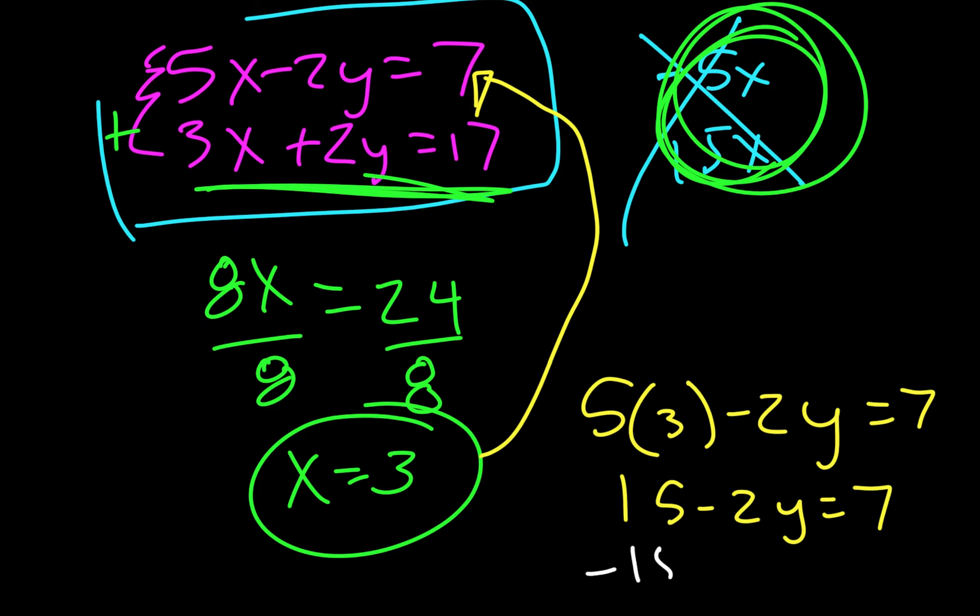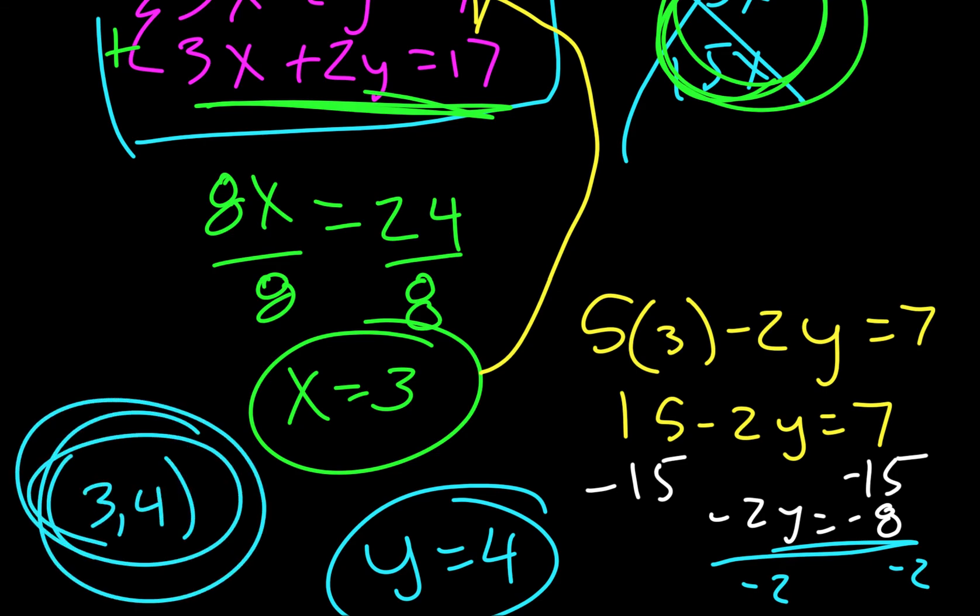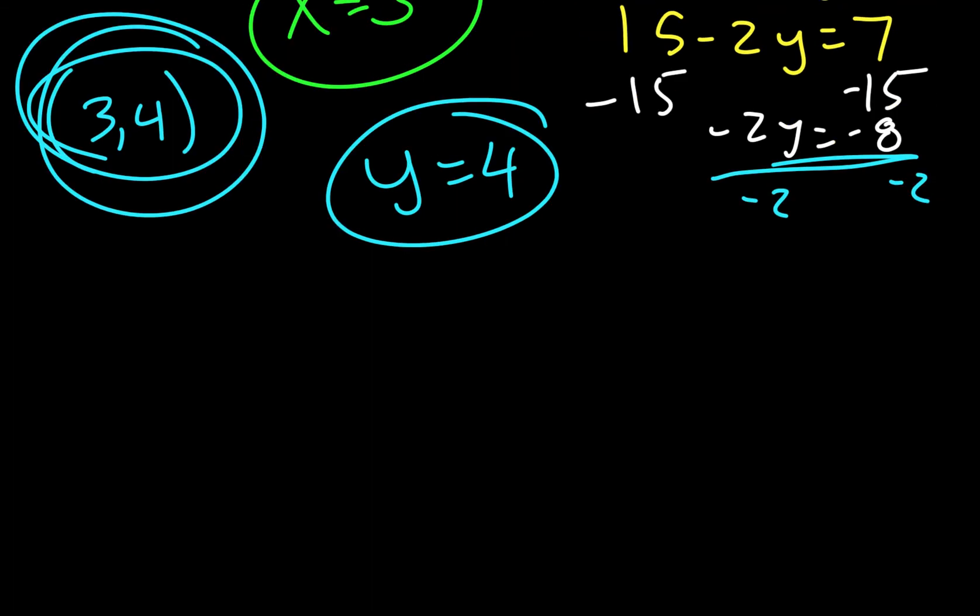And then we need to solve for y. So it's going to be 15 minus 2y equals 7. Then we subtract 15, so it's going to be negative 2y equals negative 8. So now we just need to solve this. We're going to divide by negative 2, and so we end up with y equals 4. We can choose to write this in an ordered pair if we want to, or we can keep it separate like that.